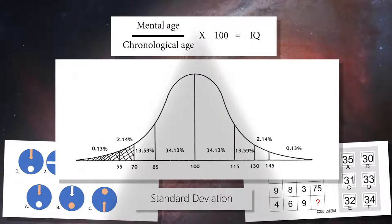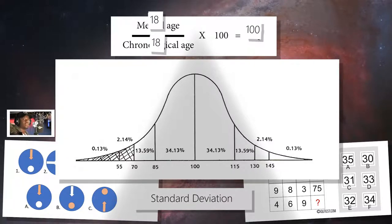This does match with Binet's formula. 18 divided by 18 is 1 times 100 is 100. However, if your mental age is different than your actual age, the result will be different. Say you're 18 years old, but taking an IQ test gives you the result that you have the intellect of a 19 year old. Your expected IQ will then be 105 when rounded down.